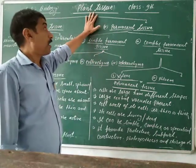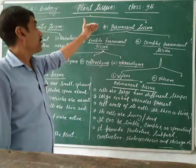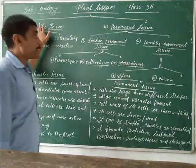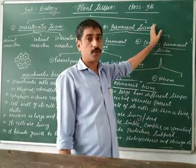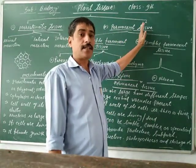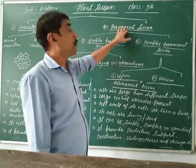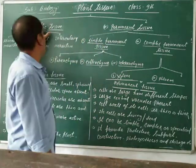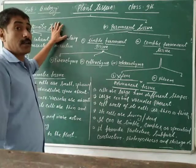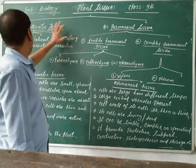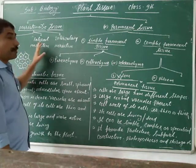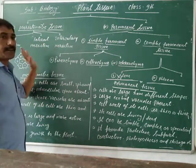Plant tissue, as you learnt in the previous part, is classified into two groups: meristematic tissue and permanent tissue, on the basis of capability of division. Meristematic tissue is capable of division. There are three types: apical meristematic, intercalary meristematic, and lateral meristematic.